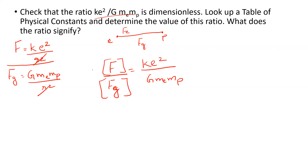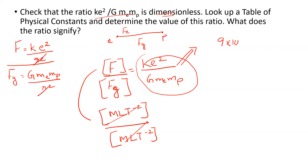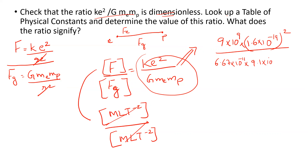Electrostatic force and gravitational force both have dimension M L T⁻². Dividing them gives a dimensionless quantity, which proves the ratio is dimensionless. Now substituting values: K = 9 × 10⁹, e = 1.6 × 10⁻¹⁹, G = 6.67 × 10⁻¹¹, mass of electron = 9.1 × 10⁻³¹, mass of proton = 1.67 × 10⁻²⁷.